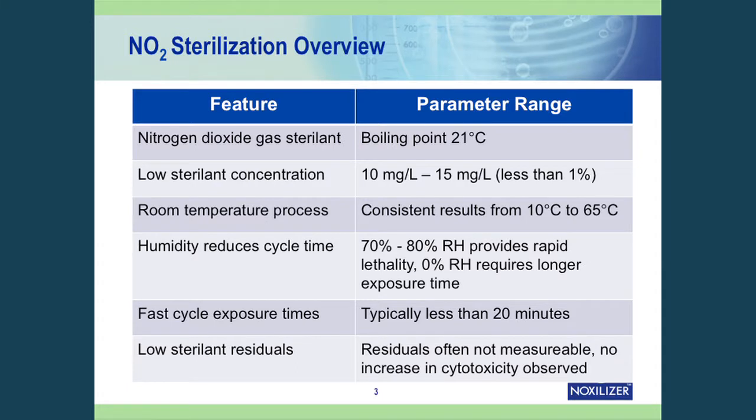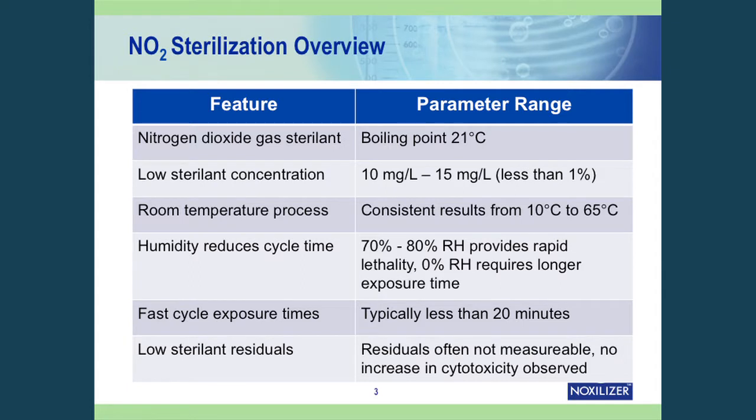The fastest cycles are at 70% relative humidity and above, and a slower cycle of 4 or 5 hours is typical for 0% relative humidity. With the 70 to 80% relative humidity cycle, the exposure time for a load of medical devices is 20 minutes. The door-to-door time for the sterilizer might be closer to an hour or an hour and a half because of evacuation, filling, pumping, aeration, and other processes. Because nitrogen dioxide has a very high vapor pressure and does not condense on surfaces, we don't see an increase in cytotoxicity after exposure due to efficient removal of sterilant residuals.